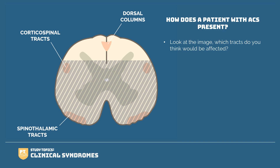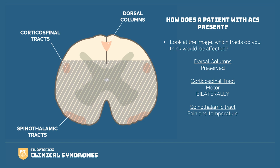The dorsal columns are not affected in anterior cord syndrome, so vibration and proprioception are preserved. The spinothalamic tract is affected, meaning pain and temperature are impaired. The corticospinal tract is also affected, meaning motor function is impaired. Because both sides of the cord are affected in the corticospinal and spinothalamic tracts, this gives us bilateral symptoms.